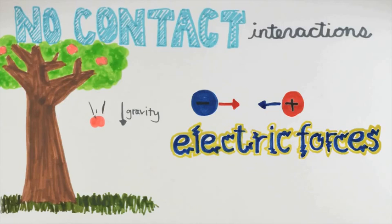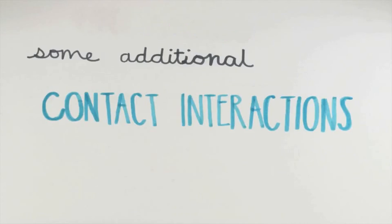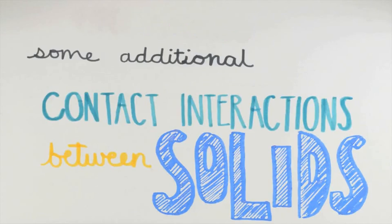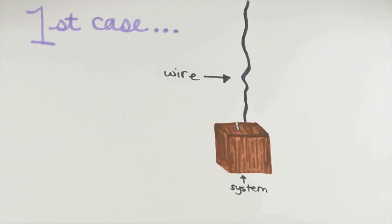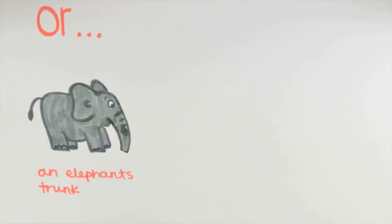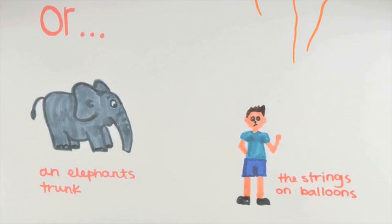In the next couple of lectures, we're going to discuss how to model some additional contact interactions that may arise between solids. Let's discuss first the case where we have a wire tied to our system. What we say here will apply, for the most part, also to strings or ropes or something similar attached to our system.